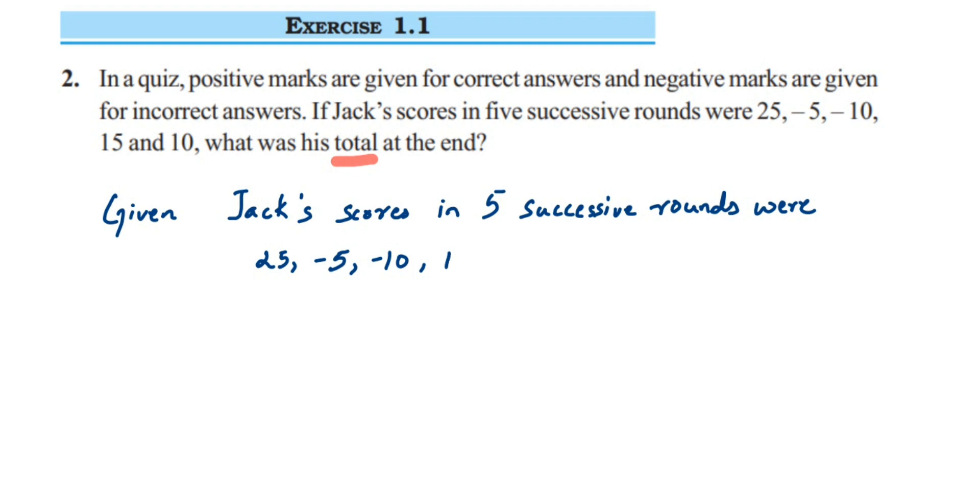Now they're asking us to find out the total. Total means we have to just add all the scores and get the answer. So therefore, total score is equal to: add all the scores, 25 plus (in the bracket) -5, then plus again negative number so I'm going to put this in a bracket, (-10), then plus 15 and then plus 10.